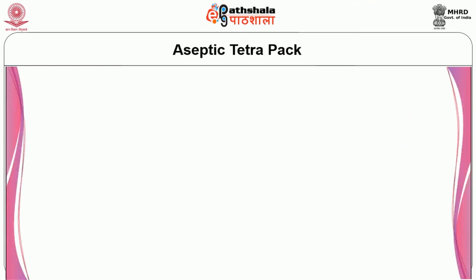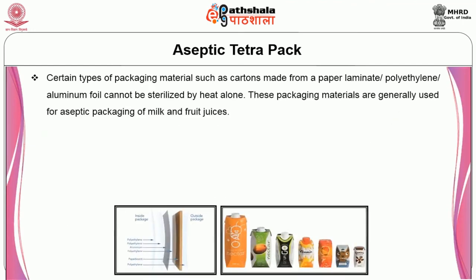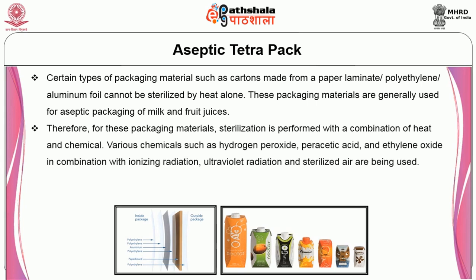Let us now discuss aseptic Tetra Pack and the working of tetra brick form-fill-seal. Certain types of packaging materials such as cartons made from paper laminate, polyethylene, and aluminum foil cannot be sterilized by heat alone. These packaging materials are generally used for aseptic packaging of milk and fruit juices. Therefore, for these packaging materials, sterilization is performed with a combination of heat and chemical.